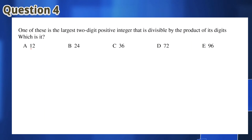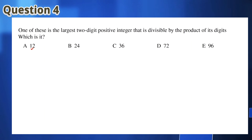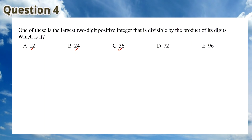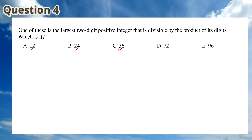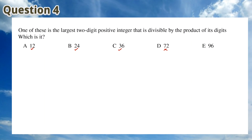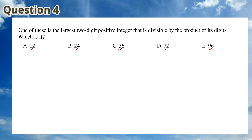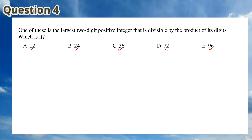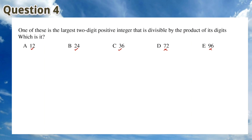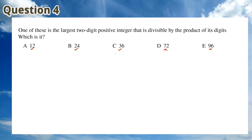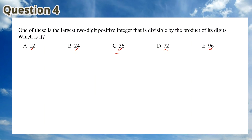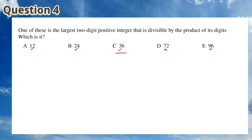For Question 4, of the options given: 12 is divisible by 2, 24 is divisible by 8, and 36 is divisible by 18. However, 72 is not divisible by 14, and 96 is not divisible by 54. Since we are told that one of these is a larger two-digit number that is divisible by the product of its digits, 36 is that number. This means that the answer is C.